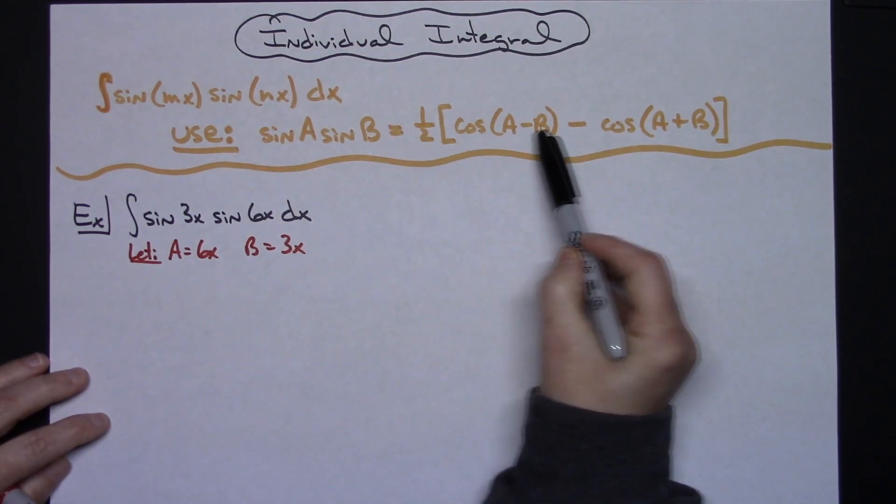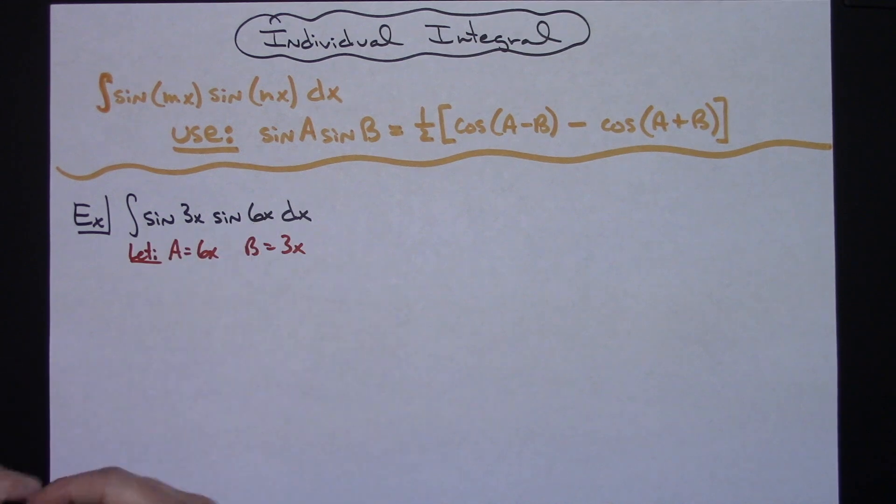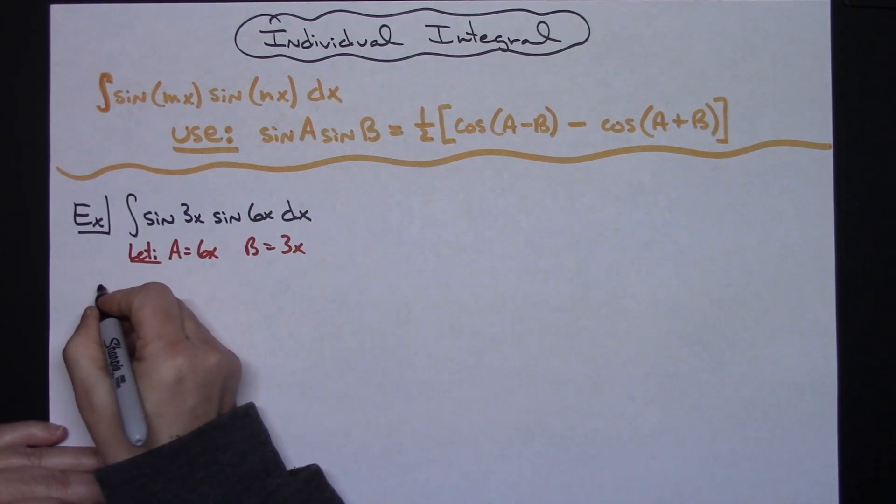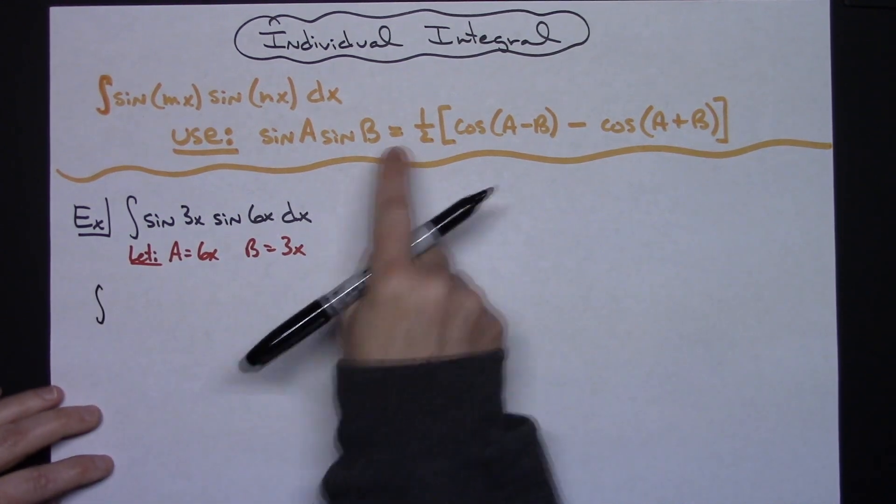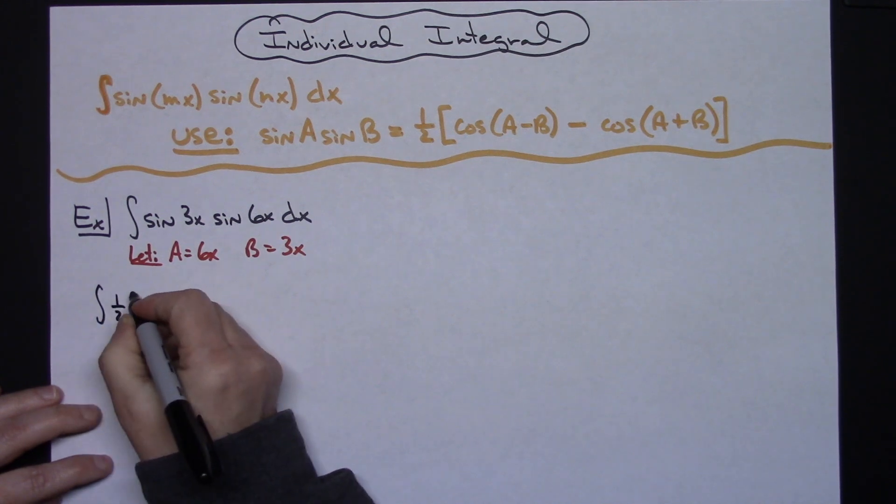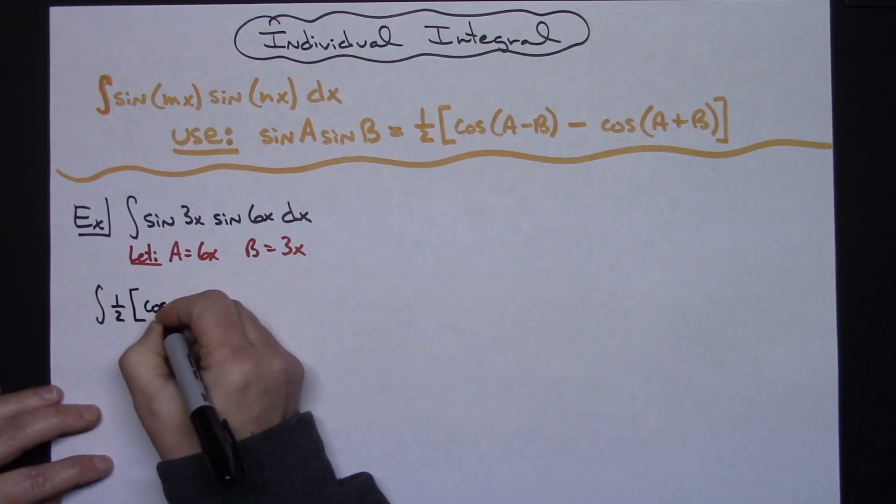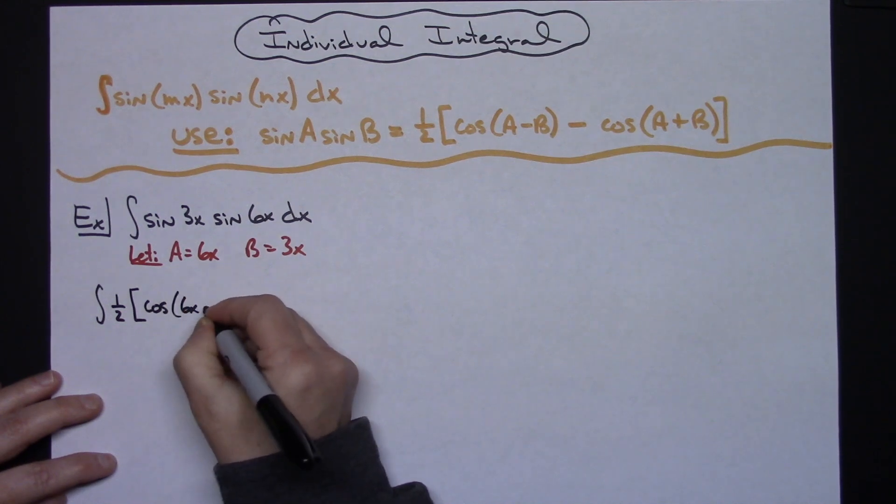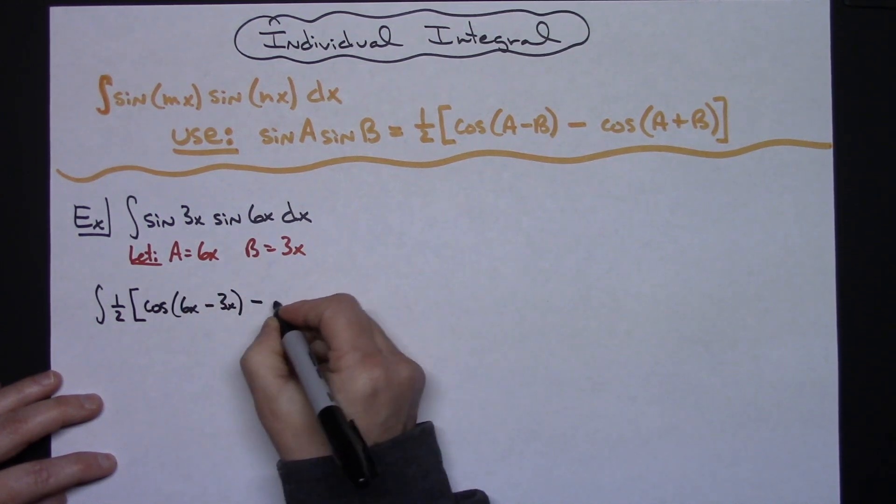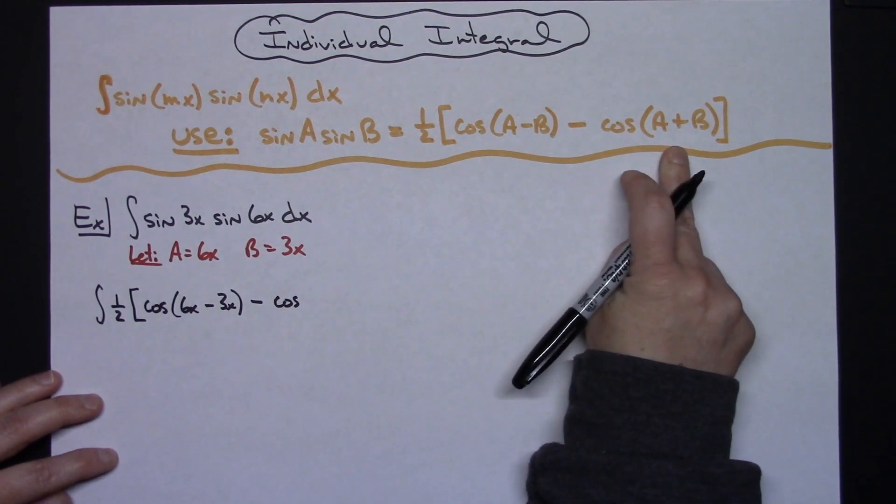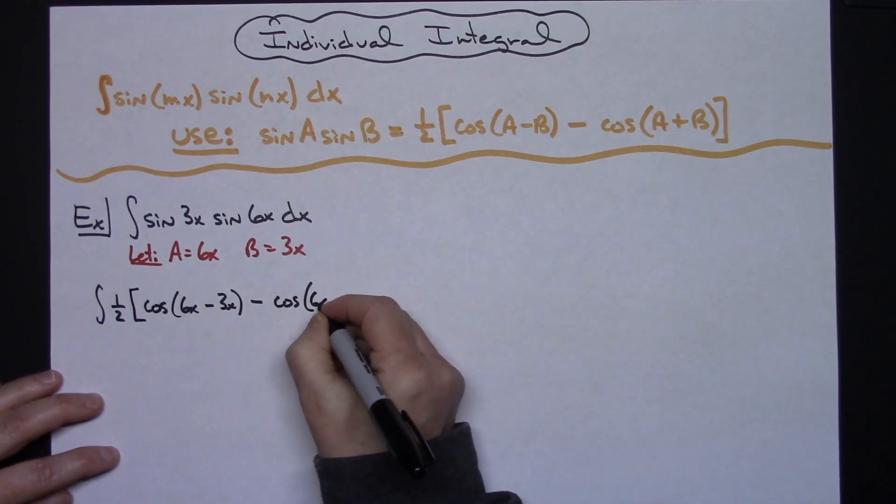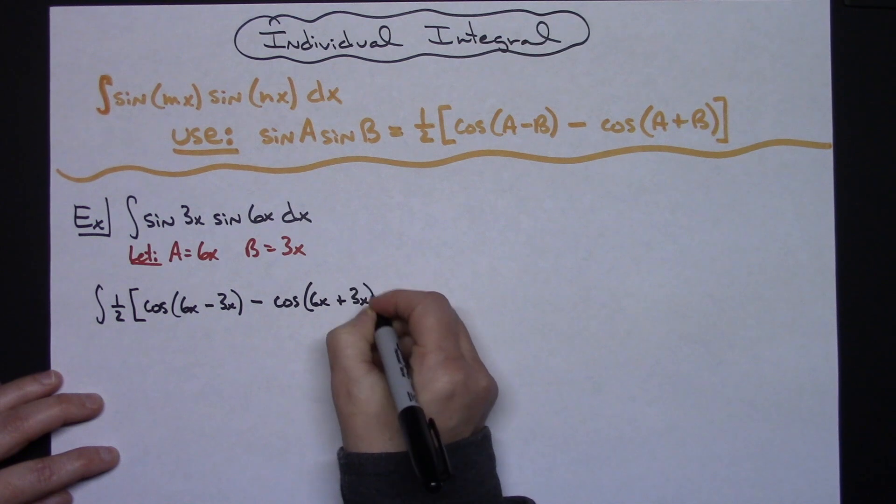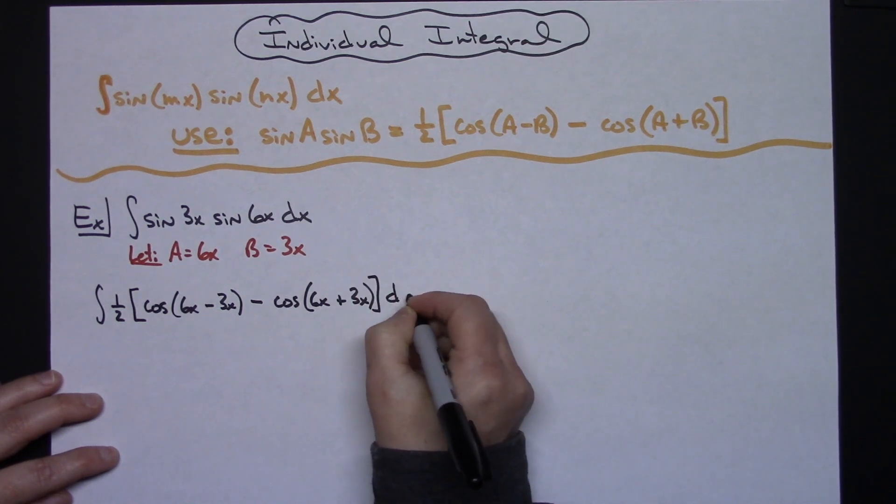Now doing that, I am going to substitute this trig formula for this integral right here. So then I'm going to have the integral of a one half times cosine. I've got to do a minus b, so 6x minus 3x, and then minus cosine. I've got to do a plus b, so 6x plus 3x, and then dx.